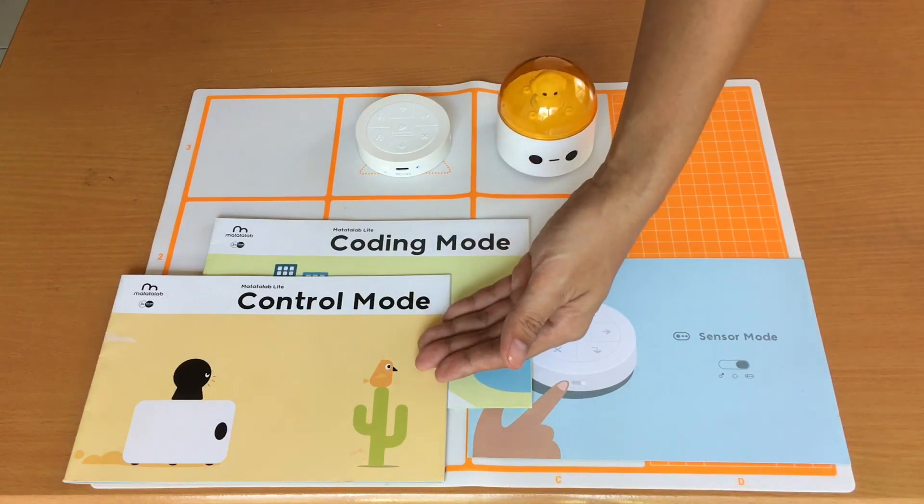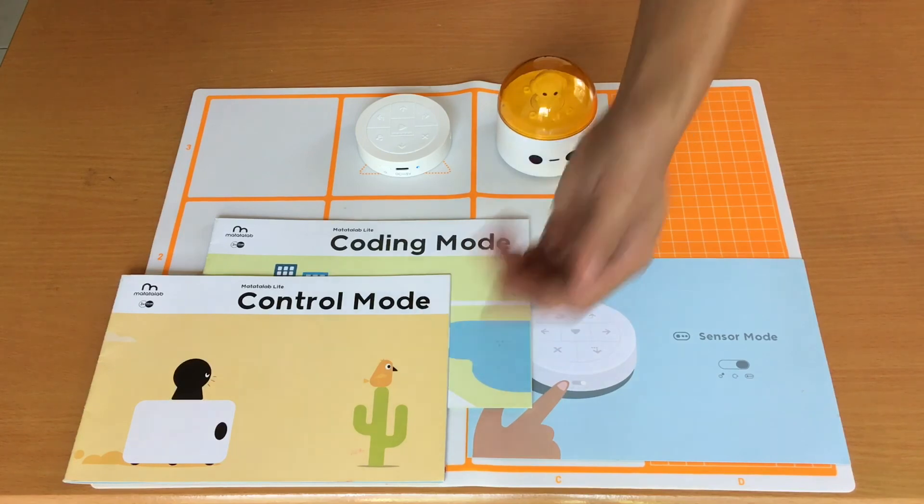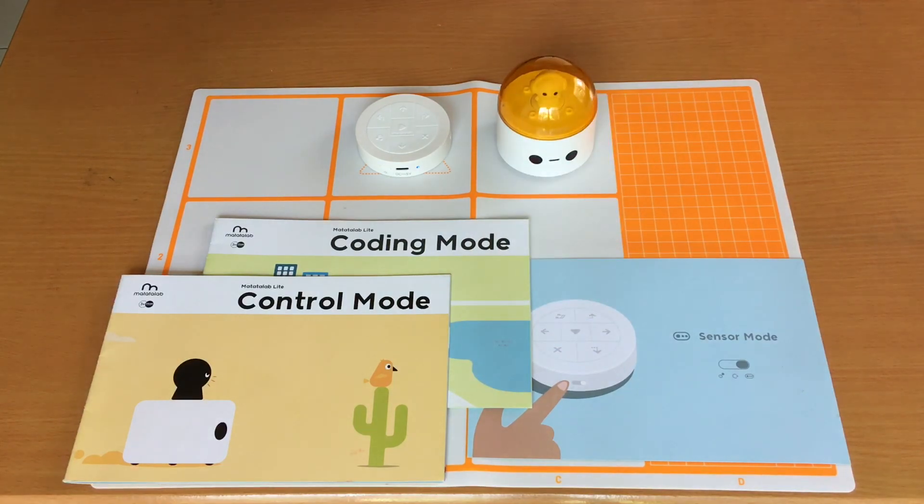In the control mode, you have gyroscope control, racing mode, and the music mode. For the coding mode, you enter a series of commands for the Matatabot to do. And for the sensor mode, which detects obstacles, colors, and motion.